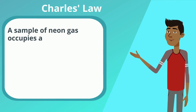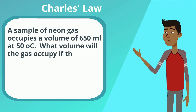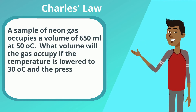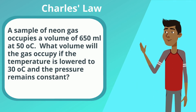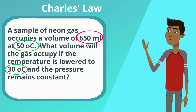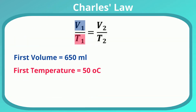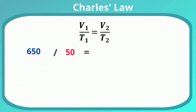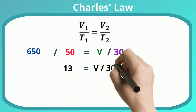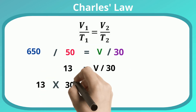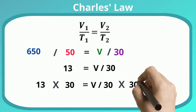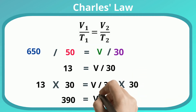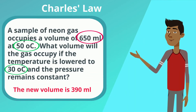Charles' Law: a sample of neon gas occupies a volume of 650 at 50 degrees Celsius. What volume will the gas occupy if the temperature is lowered to 30 degrees and the pressure remains constant? The first volume is 650, the first temperature is 50, the second volume we don't know, and the second temperature is 30. So 650 divided by 50 equals V divided by 30, giving us 13 equals V over 30. Multiply both sides by 30, giving us 390 equals V. So the new volume is 390 milliliters.